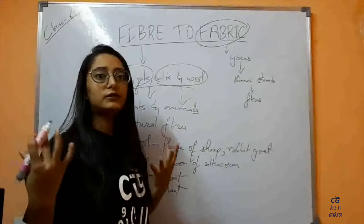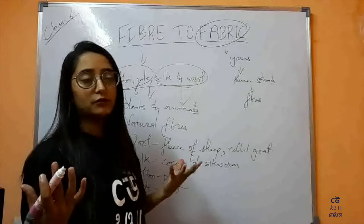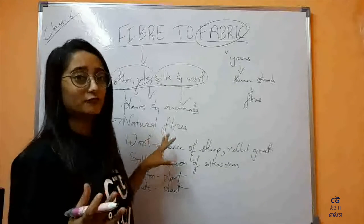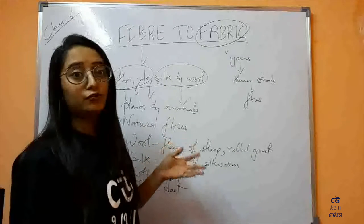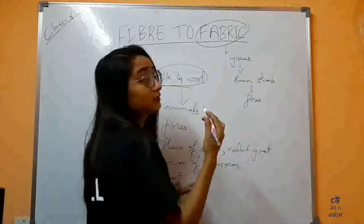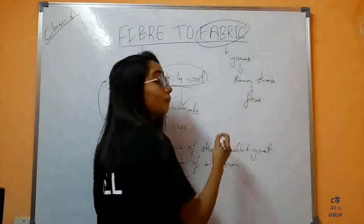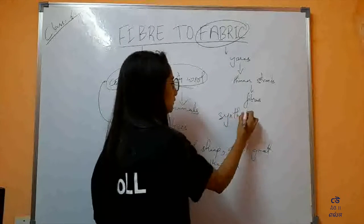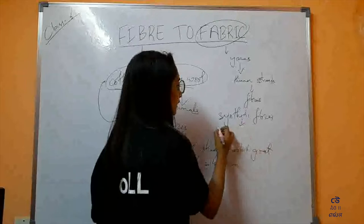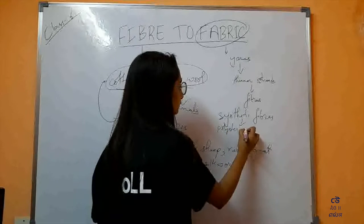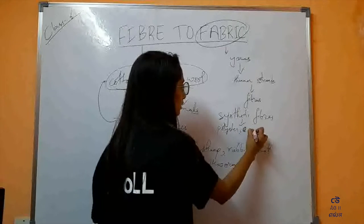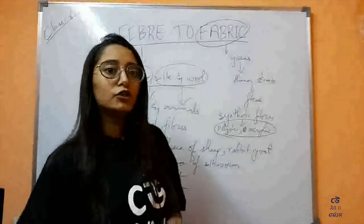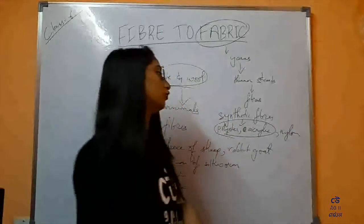Nowadays, since the new era has arrived, there has been the invention of synthetic fibers as well. We usually get these from chemicals, so those are not natural fibers — those are called synthetic fibers. Examples include polyester, acrylic, and nylon.